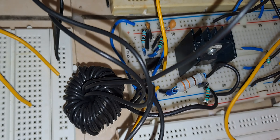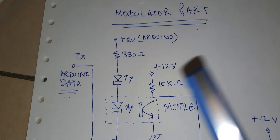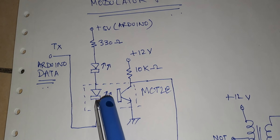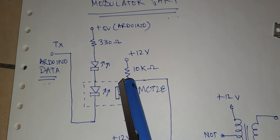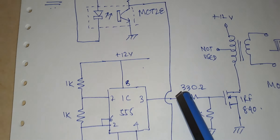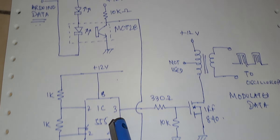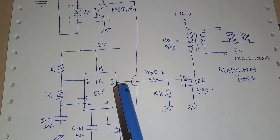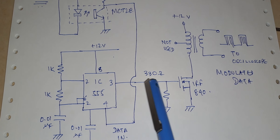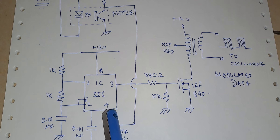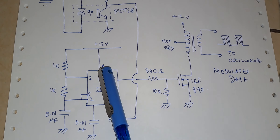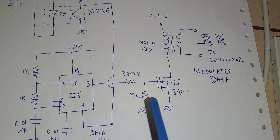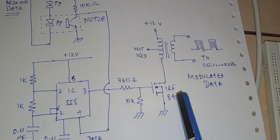Let us look into the circuit diagram now. As you can see, the Arduino Uno is transmitting data and the data is fed to the optocoupler MCT2E. The collector of this optocoupler is connected to pin number 4 of the 555 timer IC. Pin number 3 of the 555 timer IC gives the modulated signal — the data signal is the modulating signal and the oscillator is oscillating at 48 kHz. The output is fed through a 330 ohm resistor and a 10k pull-down resistor to the MOSFET IRF840.